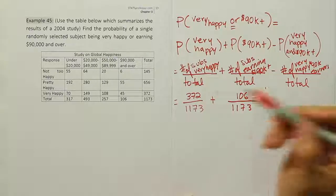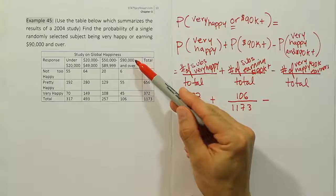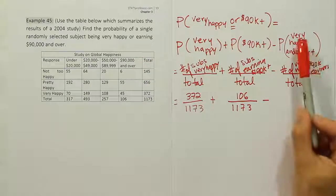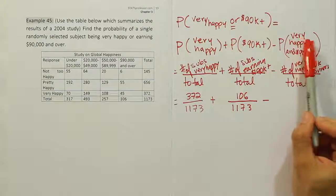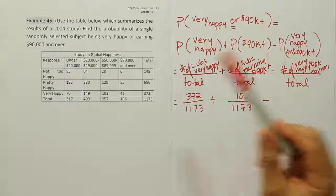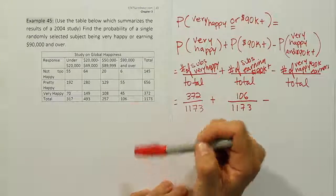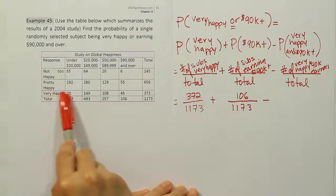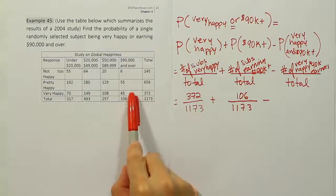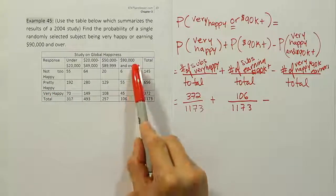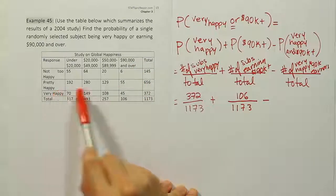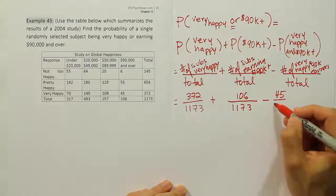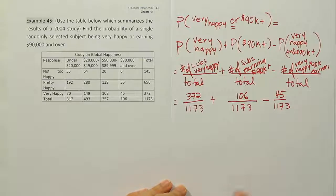Minus the number of very happy 90,000-per-year earners — people simultaneously in both categories. This is called an intersection when you have the word 'and.' In a two-way table it forms a physical intersection, like a north-south road intersecting an east-west road. That intersection gives us 45 people who earn that amount and are also very happy — 45 out of a grand total of 1173.